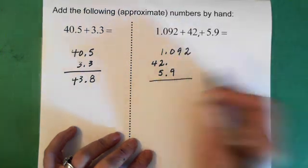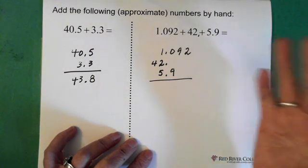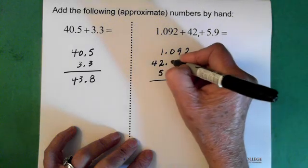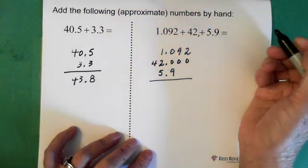Now, sometimes when you're adding up these numbers and you're having to look at this, it's just easier, especially in the beginning when you're working on it, just to put in some zeros in these places. So we sort of see what we're doing.